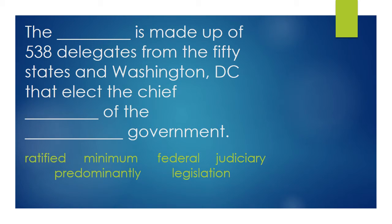The blank is made up of 538 delegates from the 50 states and Washington D.C. that elect the chief blank of the government. So 538 delegates from the 50 states and Washington D.C. is a group of people. Which vocabulary word are you familiar with that is a group of people? It's not in your word bank — it's going to be from your sort. That's right — it's the electoral college. The electoral college is that group of people who officially elects the President of the United States, and their vote happens after the popular vote.